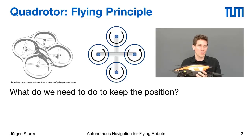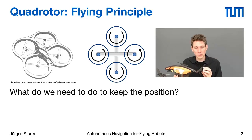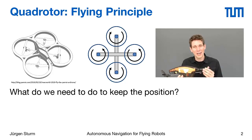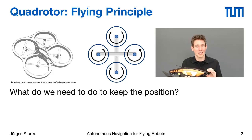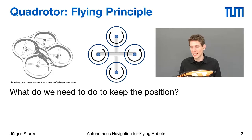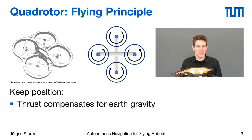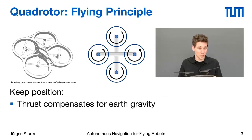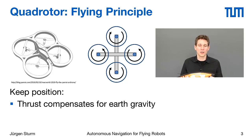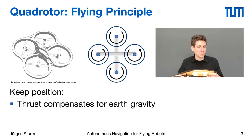A quadrotor consists of four rotor blades, and each of these rotors produces a certain airflow and, in turn, an acceleration force onto the body of the quadrotor. So if you fire up all four motors at a certain speed, you can take off. And if the thrust of all four motors combined together exactly compensates for Earth's gravity, then the quadrotor will vertically stay in place.